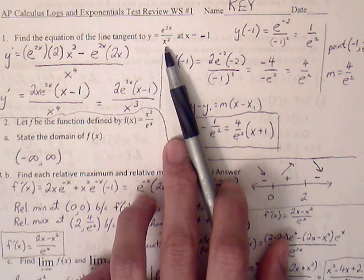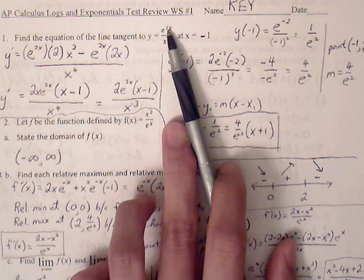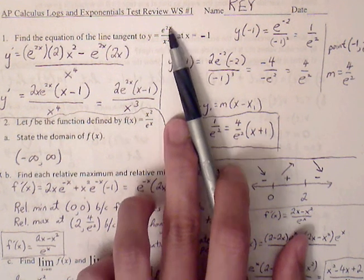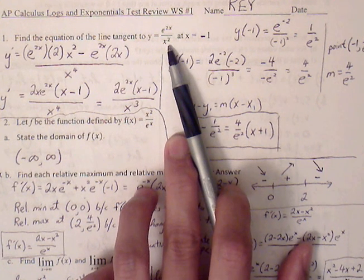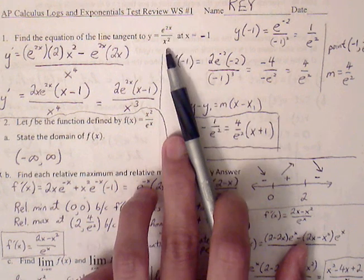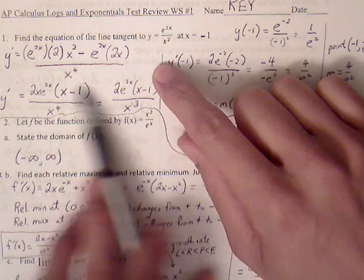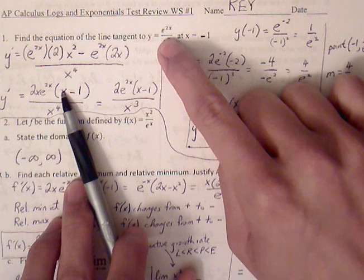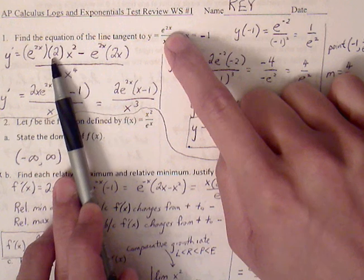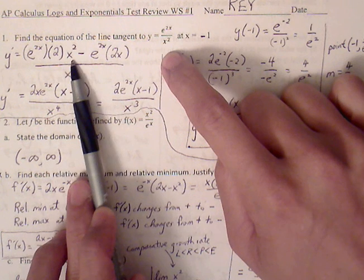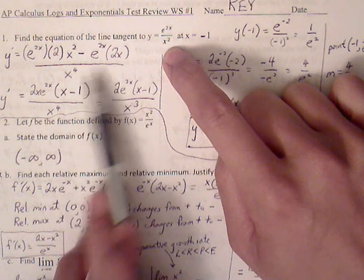To find the slope, we first need to get the derivative. We have a numerator and denominator portion, so let's use the quotient rule. The quotient rule gives us f prime g minus f g prime all over g squared. Within f prime, there is a chain rule that needs to be used. The derivative of e^(2x) is e^(2x) times 2. So that's f prime g minus f times g prime, all over g squared.